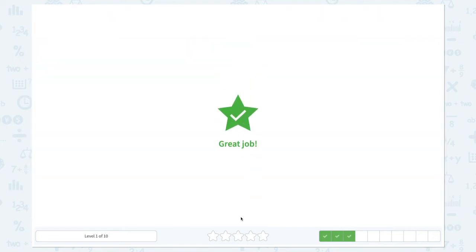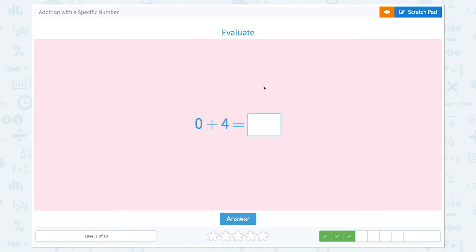Great job. Evaluate 0 plus 4 equals. Again, 0 is the same as none, so we're not adding anything to 4, so the answer is still 4. Correct. Add 0 plus 0 equals 0.